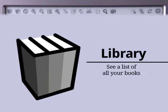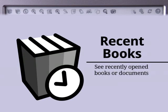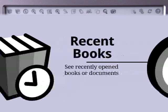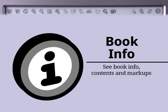Press the Library icon to see a list of all your books. Press the Recent Books icon to see the most recently opened books or documents. Press the Book Info icon to view the title and author of the book on the touch screen.